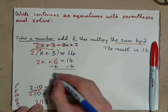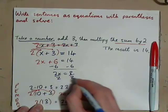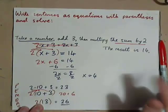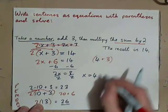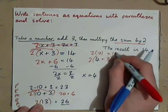And then solve the equation. Subtract 6 from both sides. 2x is 8 divided by 2, and it looks like x is 4. And you probably guessed that already. 4 plus 3 makes 7. 2 times that, 2 times 7, 14, right?